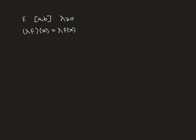To do this, we're going to need a few results about suprema and infima that hold in the real line. Let's say we have a set X, and a set Y defined to be all the values in X times lambda, where lambda is a non-negative real number — so Y = {λx : x ∈ X}.